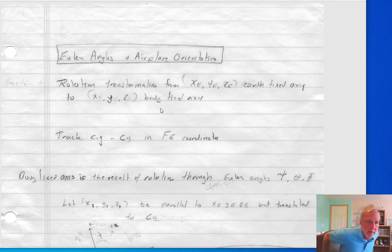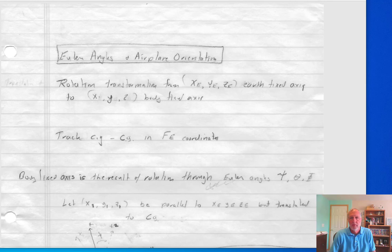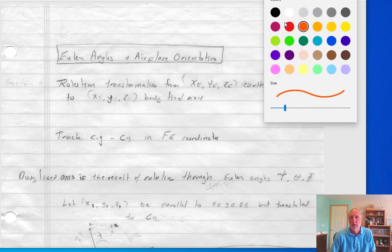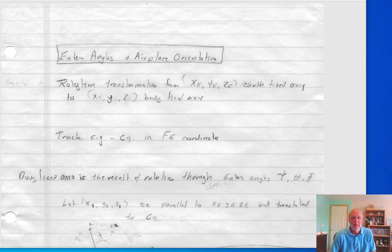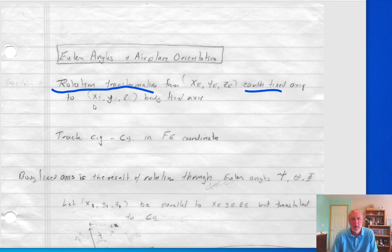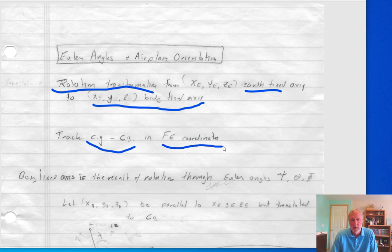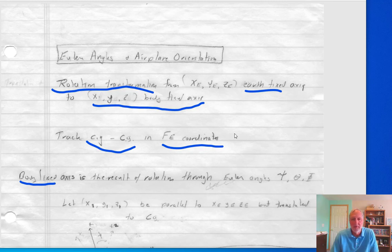Hello, this is a lecture about aircraft orientation described via Euler Angles. Aircraft orientation is represented via a rotation transformation from the earth-fixed body axis to the XYZ body-fixed axis system on the airplane. The idea is that we can track the CG in the earth-fixed axis coordinate system, but all the calculations we do on the aircraft are done in the body-fixed axis. We need to know how the two are related because the gravity vector we know in the earth-fixed axis system, but we need its force in the body-fixed axis system.